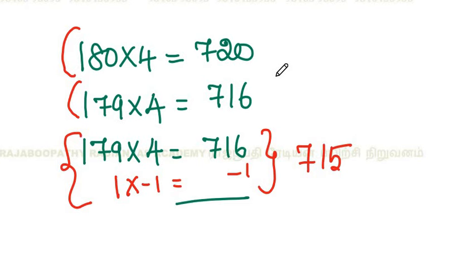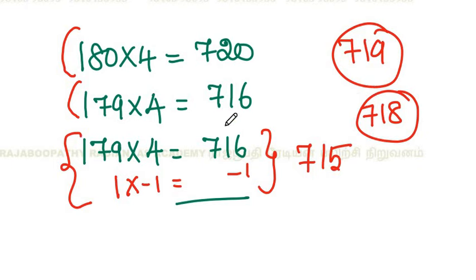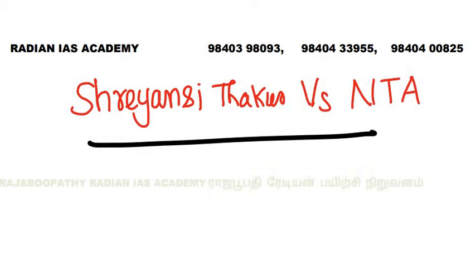If it is minus 1, then it will be 715. So what do you see in this NEET score? If you have a score, it will be 715. Not only that, but you could get scores like 719, 718 in Physics — and even get a score of 720.